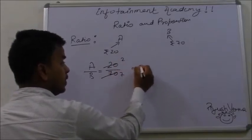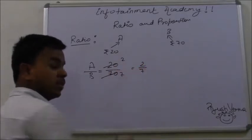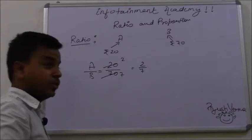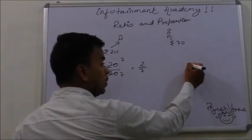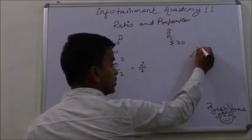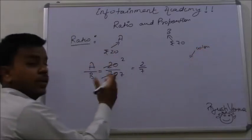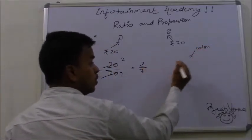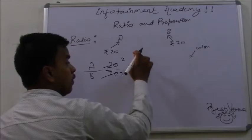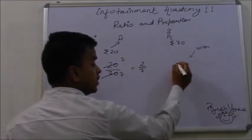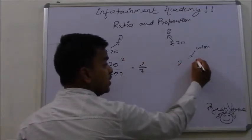The ratio of A to B comes out to be 2 upon 7. There is another method of writing ratio by putting a colon between the quantities. The ratio of A to B comes out to be 2 colon 7.